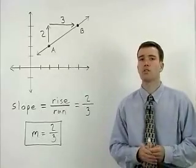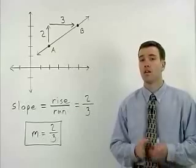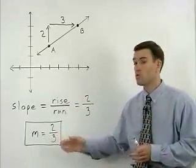It's important to understand that no matter what two points you choose along this line, the slope or rise over run can always be simplified to two thirds.